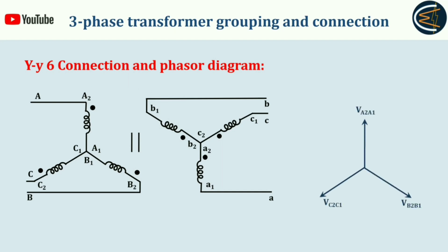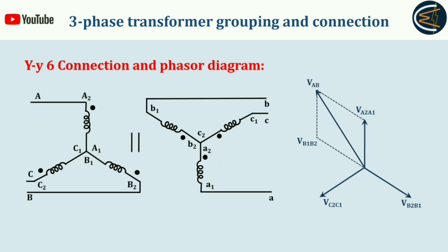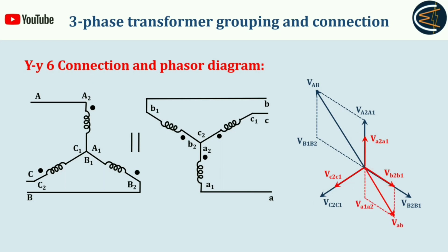For the primary side, the phasor diagram for the phase voltages is balanced, and the resultant line voltage V_AB of the primary side is determined accordingly. The red-marked phasors represent the phase voltages of the secondary side. The secondary side line voltage V_ab is the resultant of V_b2b1 and V_a1a2.